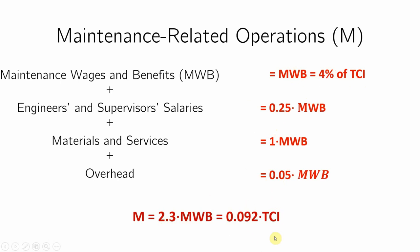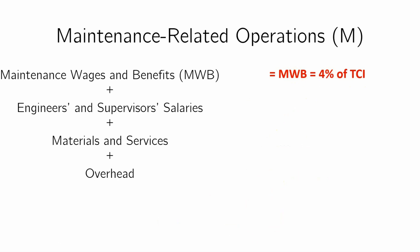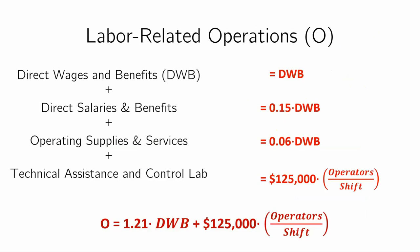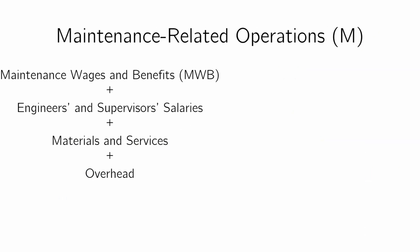So now we can approximate M and we can approximate O, and the two together will give us the total expenses needed for the plant to operate.